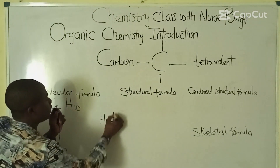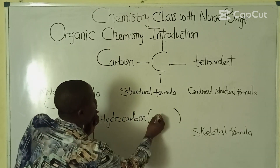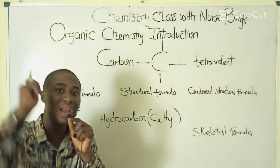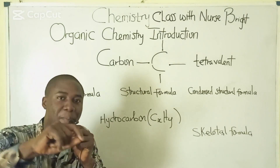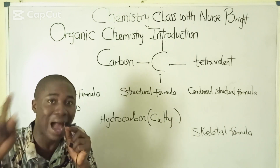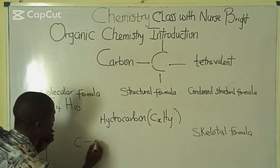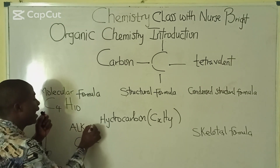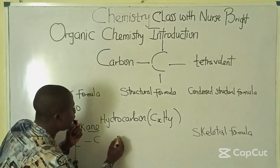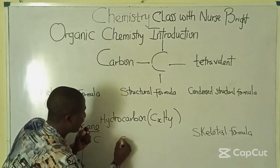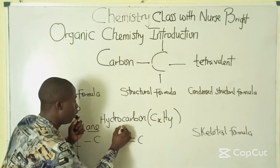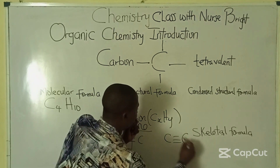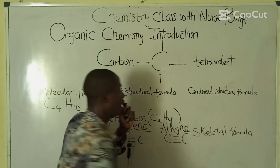This set of compounds being discussed are called hydrocarbons, meaning they contain carbon and hydrogen. Hydrocarbons can be classified into three types based on the number of bonds between the carbon atoms. A hydrocarbon with a single bond between carbon atoms is called an alkane. A hydrocarbon containing a carbon-carbon double bond is called an alkene. A hydrocarbon containing a carbon-carbon triple bond is called an alkyne.